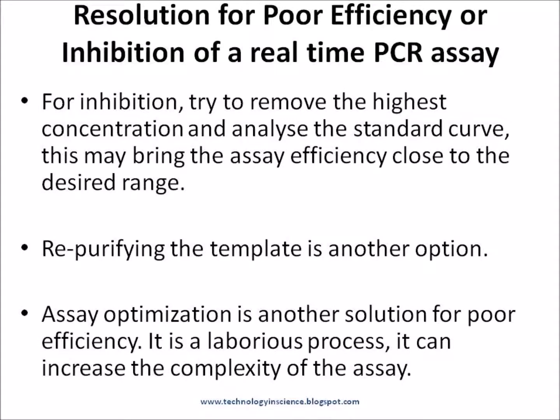Once it is found that the assay is not performing at close to 100% efficiency, or inhibition is occurring, steps should be taken to bring the efficiency to an accepted range. For inhibition, try removing the highest concentration DNA dilution and analyzing the standard curve. This may bring the assay efficiency close to the desired range, because the highest template concentration also carries the highest amount of inhibitors — when diluted, inhibitors are reduced to a level that is no longer inhibitory.